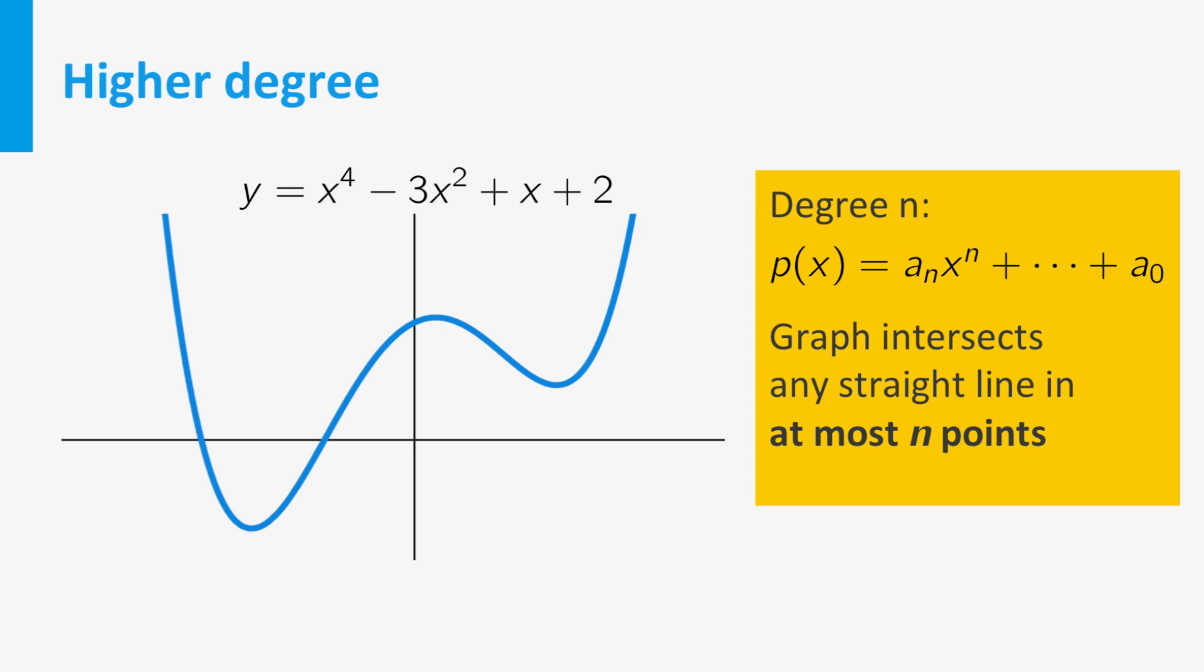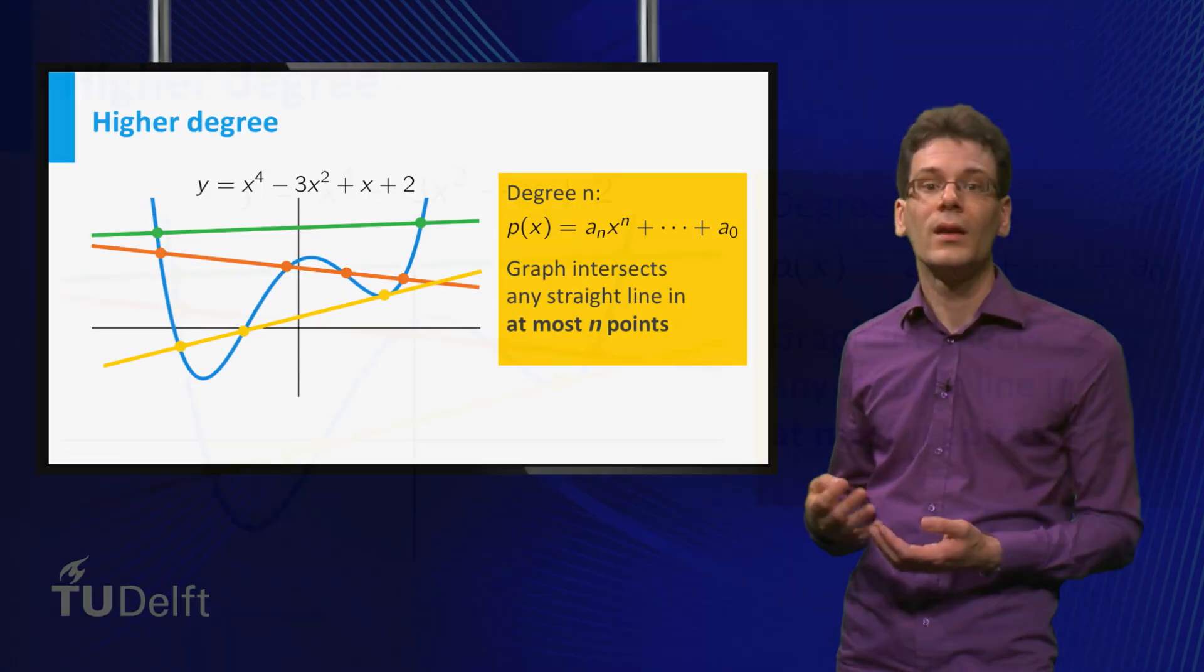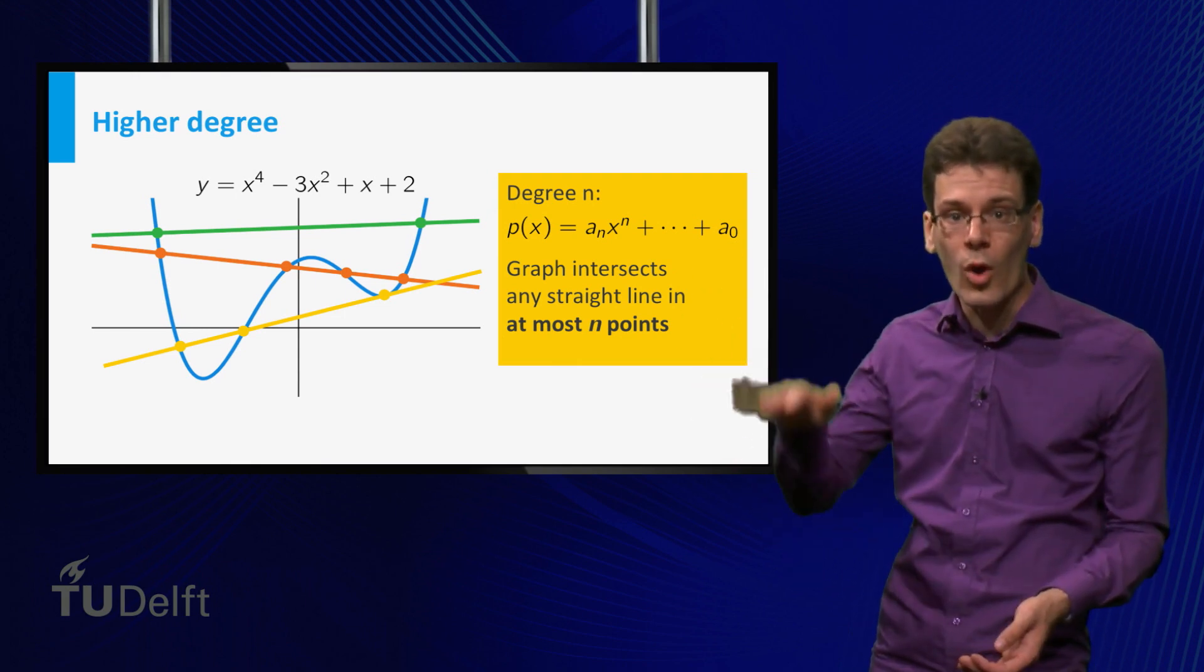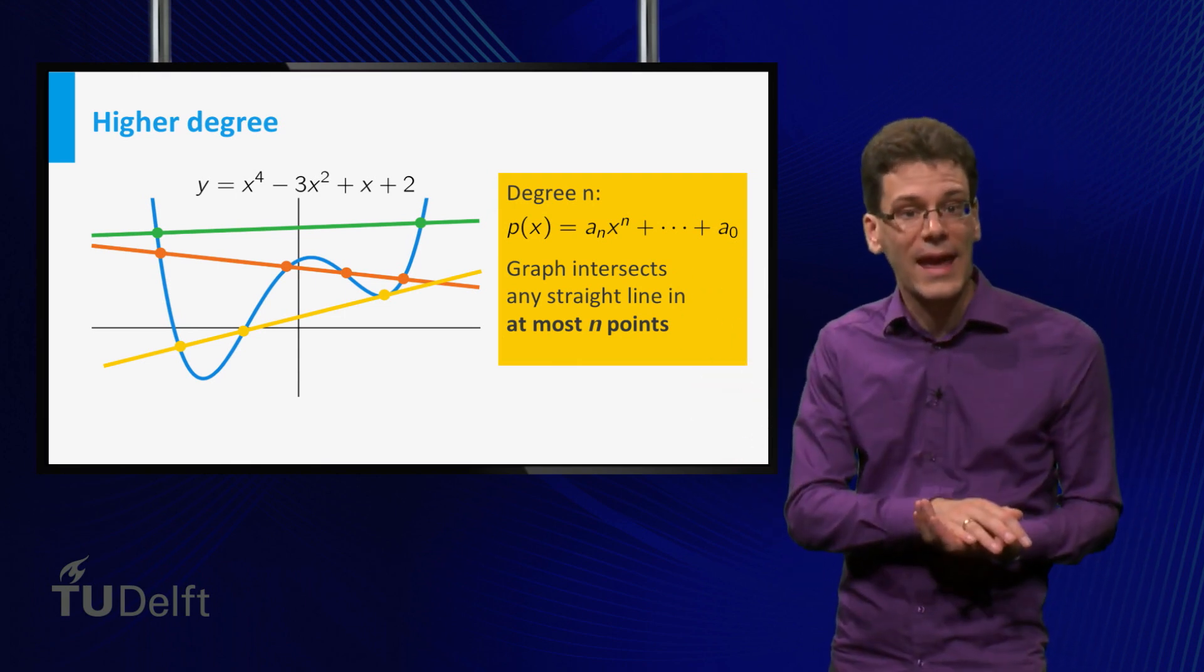For example, in the picture you see the graph of a degree 4 polynomial function. Looking at several straight lines, you see that none of them intersect the graph in more than 4 points. Intuitively, you can think of it as follows. The higher the degree, the more wobbly the polynomial function may behave.